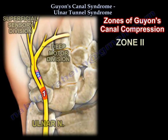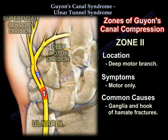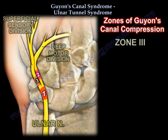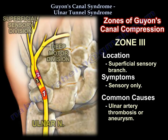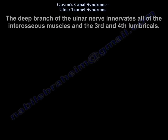Zone 2 — Location: deep motor branch. Symptoms: motor only. Common causes: ganglia and hook of hamate fractures. Zone 3 — Location: superficial sensory branch. Symptoms: sensory only. Common causes: ulnar artery thrombosis or aneurysm.